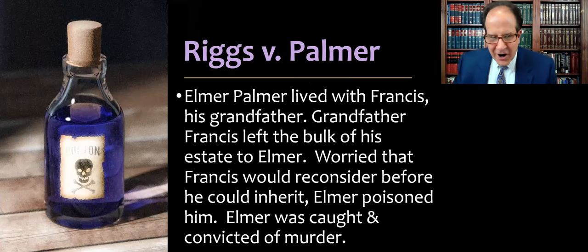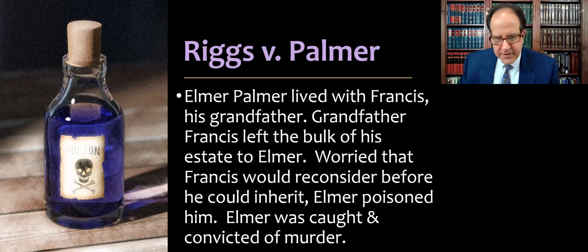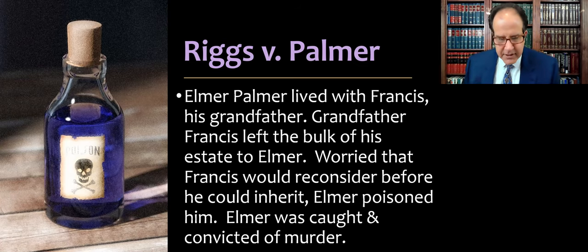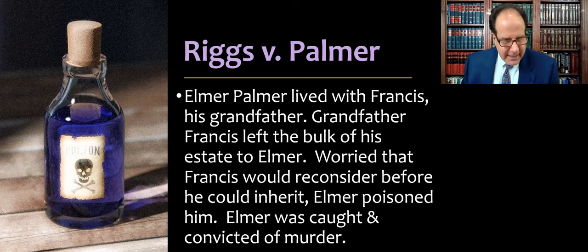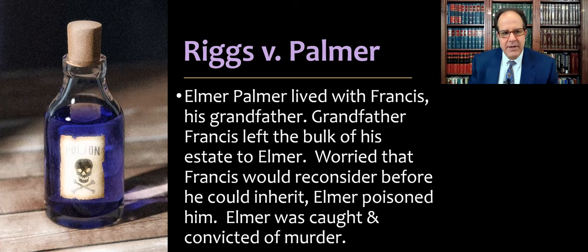Elmer Palmer is our bad guy in the case. He's a young man who lives with his grandfather Francis — Francis Palmer — who left the bulk of his estate to Elmer. Elmer was worried that Francis would reconsider and was actually preparing to write him out of the will. So Elmer poisoned him so that he could inherit with the will intact. Elmer was caught, convicted of murder, and was presumably sitting in a jail cell at the time of this case, but he still wanted to inherit the money.